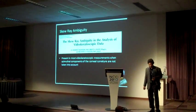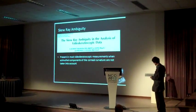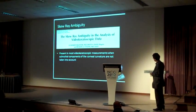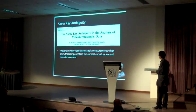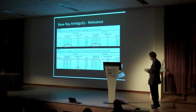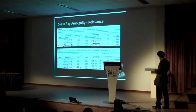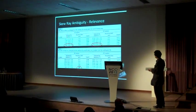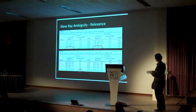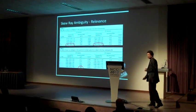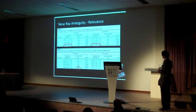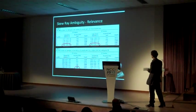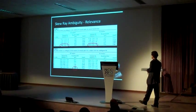The other issue when dealing with anterior eye topography is the skew ray problem — essentially most videokeratoscopes have a problem with skew rays. For normal eyes maybe it's not that relevant, but if you look at the results for a keratoconic eye, we can see significantly different results in estimated refraction. Using a Maloney skew correction, we don't see differences in wavefront RMS or estimated visual acuity. For subjects who undergo RK — radial keratotomy — only for large corneal diameters do we start seeing clinically significant differences.